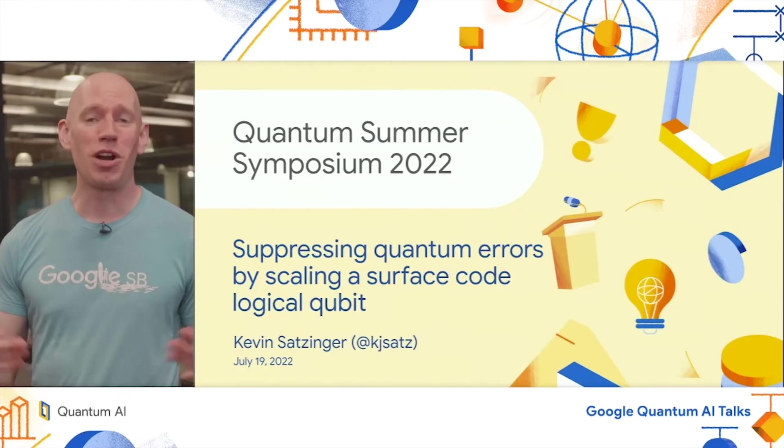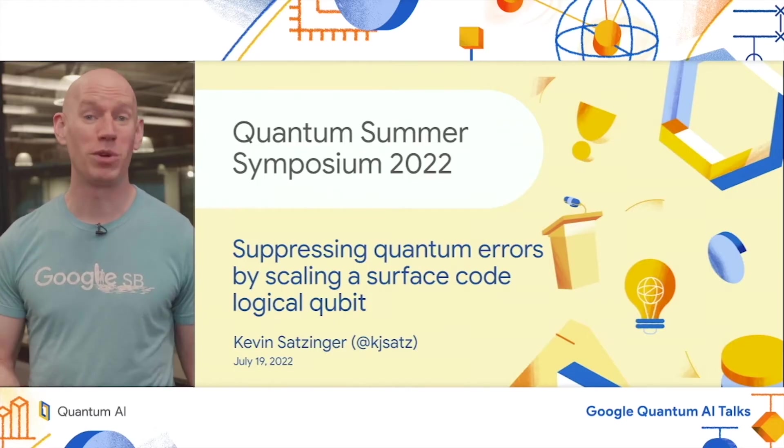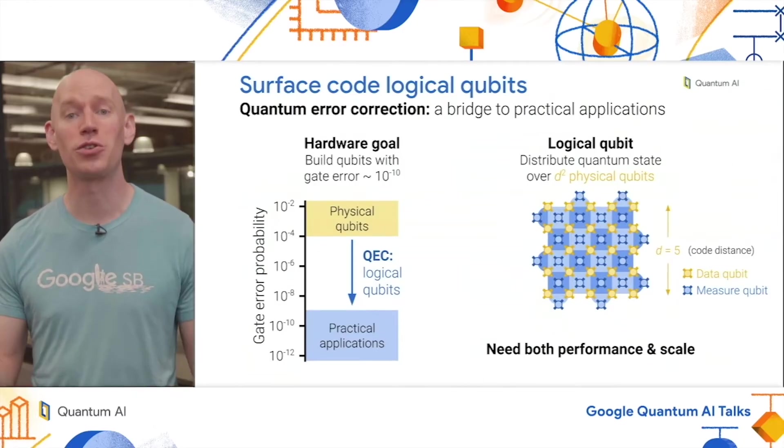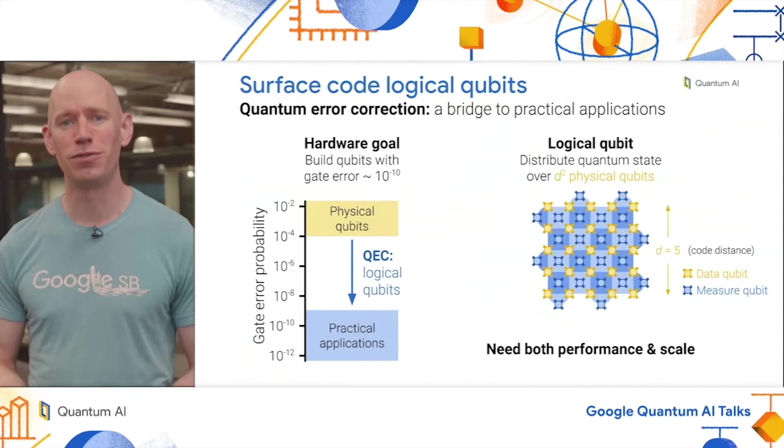In order to run the quantum algorithms of our dreams, we think we need an error probability per operation of perhaps one in a billion or one in a trillion, while our physical qubits are limited to more like one in 1000. To cross that chasm of orders of magnitude, we plan to use quantum error correction to build a bridge, specifically encoding our quantum information into logical qubits, where the logical qubit is distributed across an array of physical qubits in such a way that it's immune to local errors on individual physical qubits.